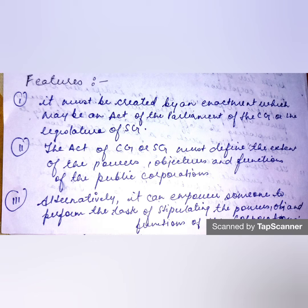Now let's look at the features of public corporations. First, a public corporation must be created by an Act of Parliament of the central government or the state government. Second, the central or state government and the particular act should define the corporation's extent, objectives, and functions — how many there are and what they need to follow. Third, the act can alternatively empower someone to stipulate the objectives and functions of the corporation.